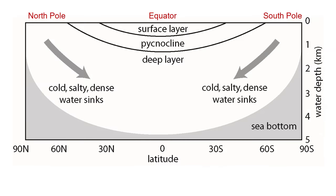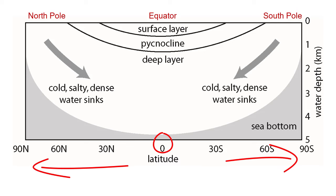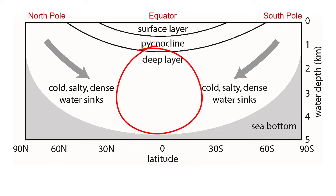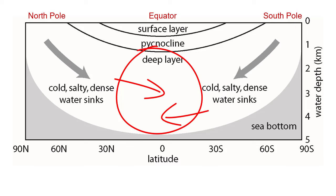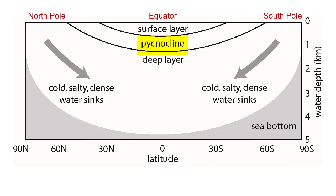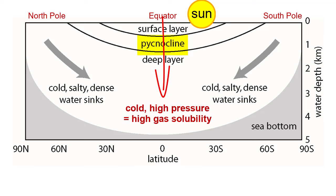Looking at a cross-section of the world's oceans with the equator in the middle and poles on the ends, the deep water of the world's oceans comes from the poles, where cold temperatures give it high density. It sinks there and spreads under the warmer surface waters. The pycnocline is the boundary between less dense surface water and denser water below. Descending across the pycnocline into deep waters, temperatures get colder and pressure increases — both of which increase gas solubility, providing yet another reason for greater carbonation at depth.